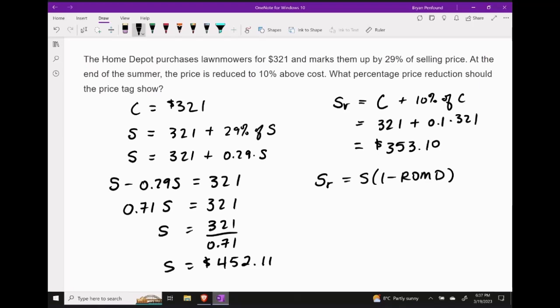Now we have the ability to connect the selling price and the reduced selling price with the following formula. Substituting in our reduced selling price and selling price, we get the following. Let's go ahead and divide both sides of this equation by 452.11. This is going to allow us to remove the brackets on the right-hand side of the equation.